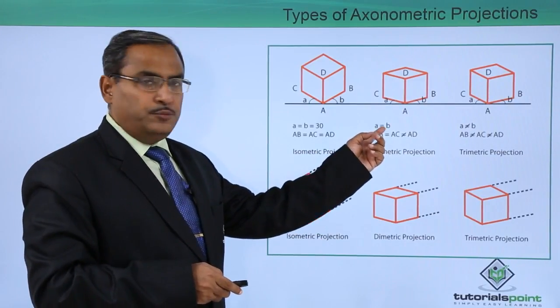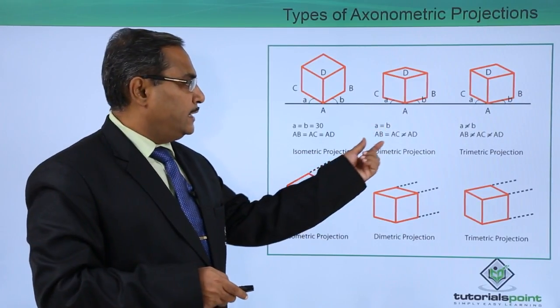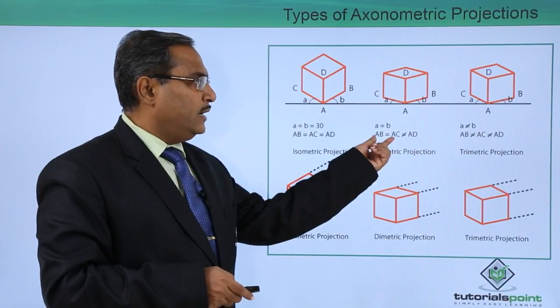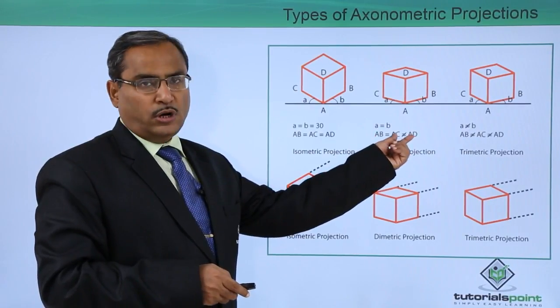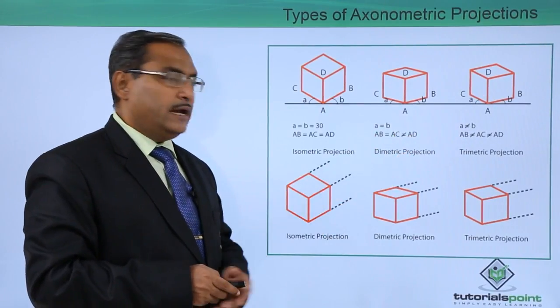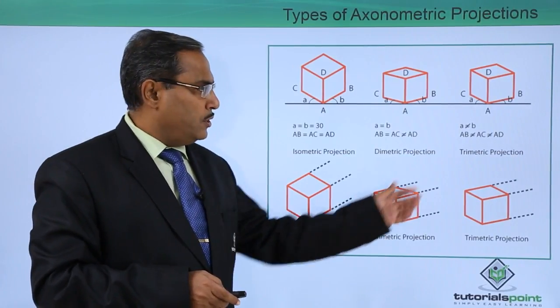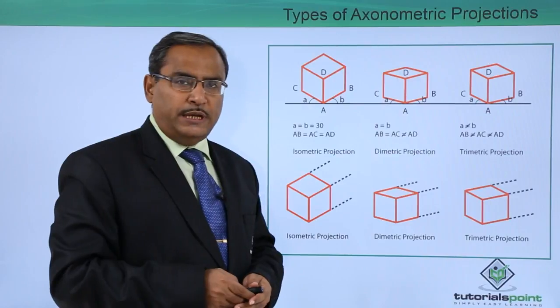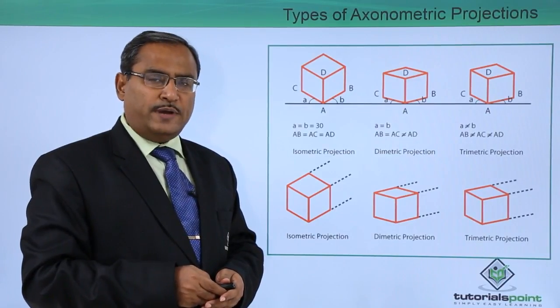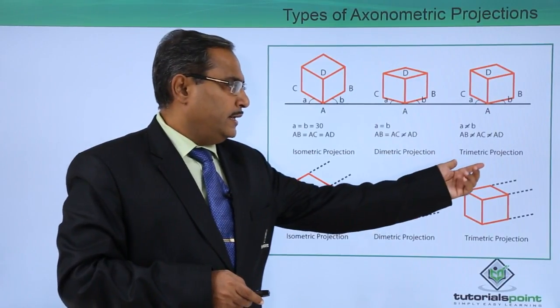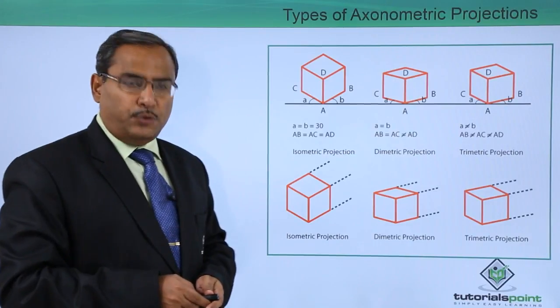And in case A is equal to B, but not equal to 30, in that case we can go for AB is equal to AC, but it is not equal to AD. It is known as dimetric projection and accordingly the projection has been shown. But when A is not equal to B, so AB is not equal to AC is not equal to AD, then it is known as trimetric projection.